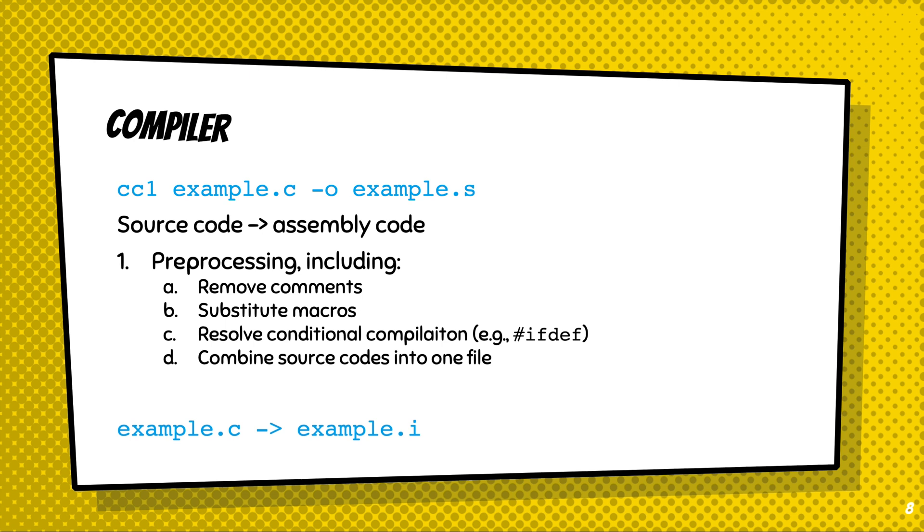The first step is preprocessing. In this step, the preprocessor will remove comments, substitute macros with the actual definition, resolve conditional compilations such as #ifdef, and combine source code into one file. As a result, the source code will be converted to an intermediate file called example.i.